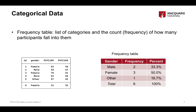There are three columns to this table. The first column lists the variable that we're talking about, which is gender, and the three specific categories or types of gender that we've measured. We have a frequency column, which is just a count — the number of observations that fall into that particular category.